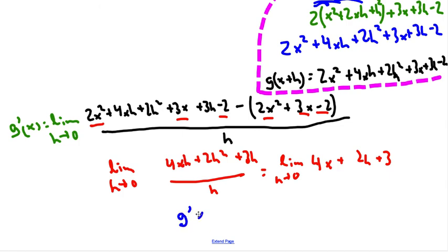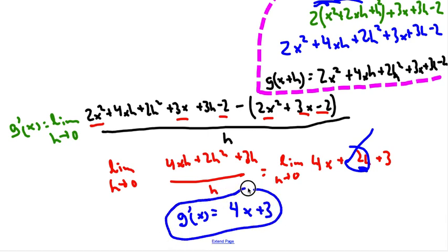So, remember, this is g'(x), and when I plug 0 in, the only place I'm going to plug 0 in here is going to go bye-bye, gone. So, I'm going to end up with 4x + 3, and that is what the derivative is.